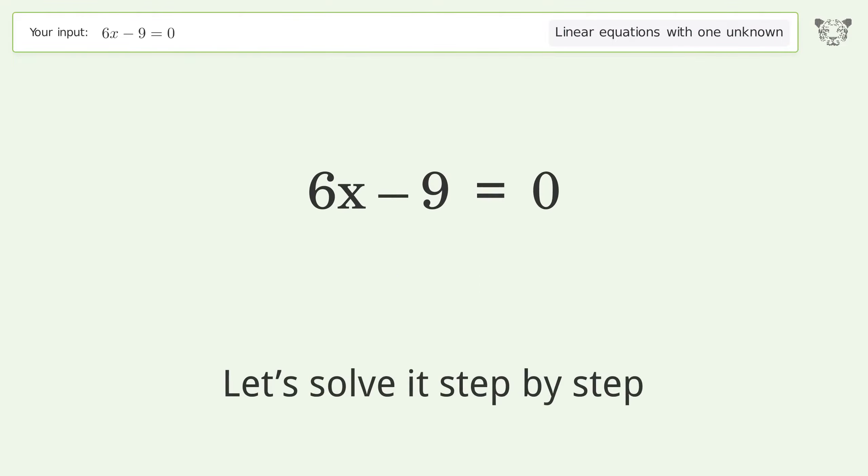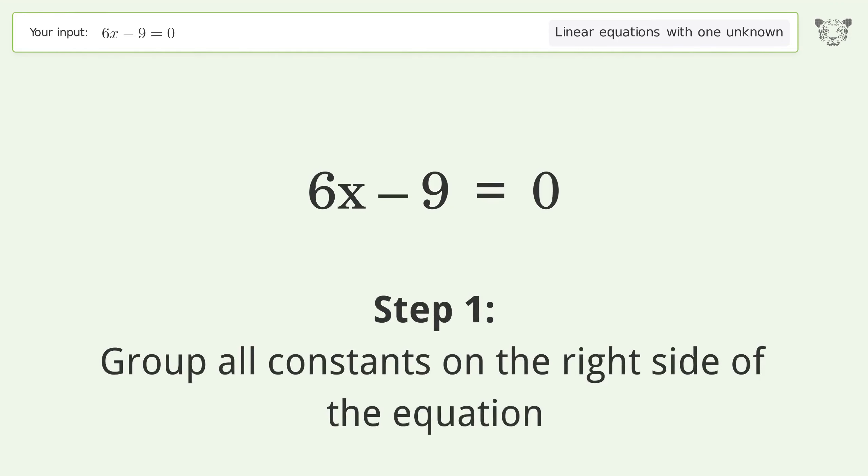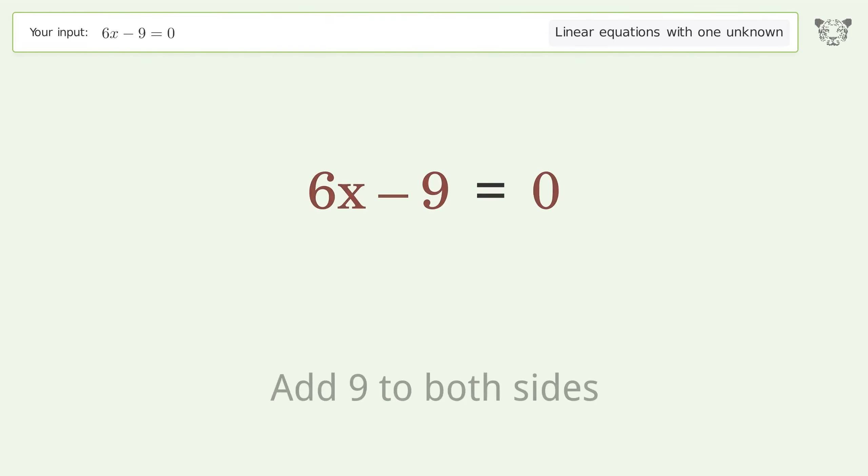Let's solve it step by step. Group all constants on the right side of the equation. Add 9 to both sides.